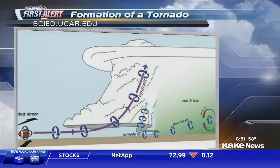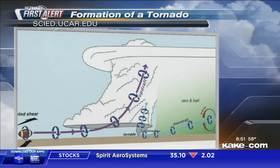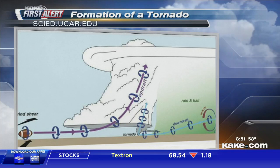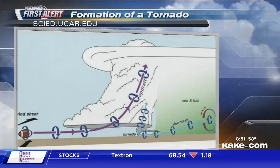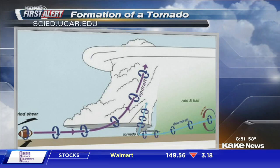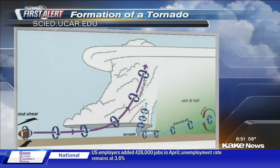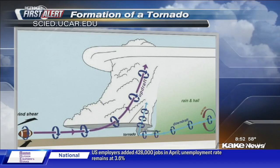It starts off horizontally. But as the thunderstorm builds up, we see the strong vertical updrafts that turn that spin into a vertical direction. The thunderstorm starts to spin as a supercell. And you know how a skater can spin faster if she pulls her arms in? That's how a tornado works. As the rotation of the thunderstorm narrows down to the area of that tornado, that is when you see the strong winds — 100, 200 miles an hour.